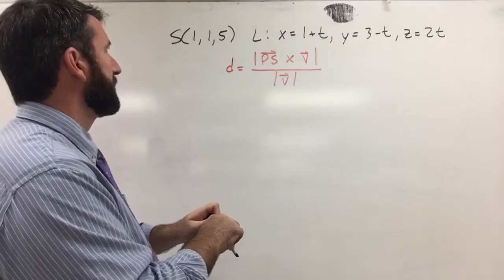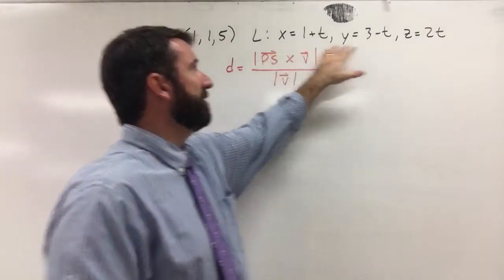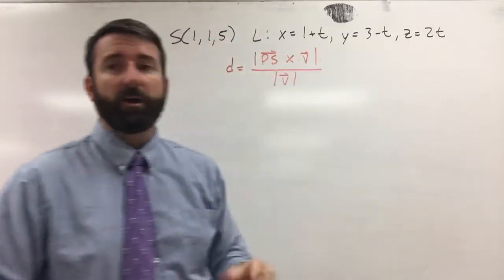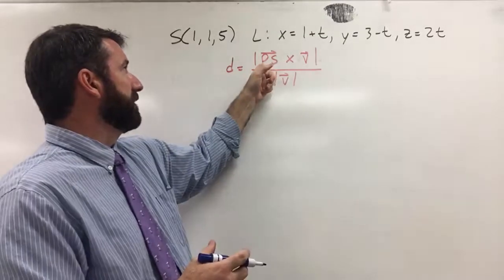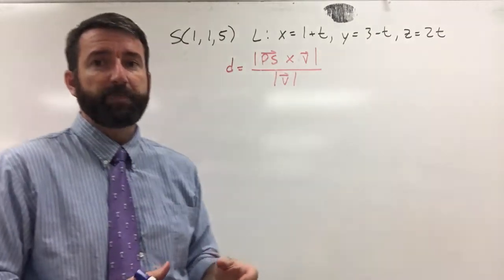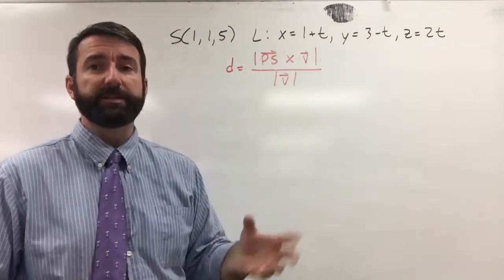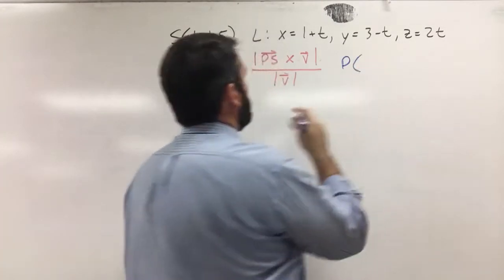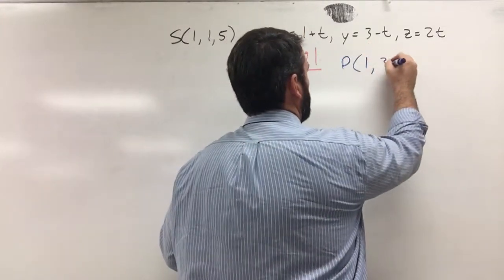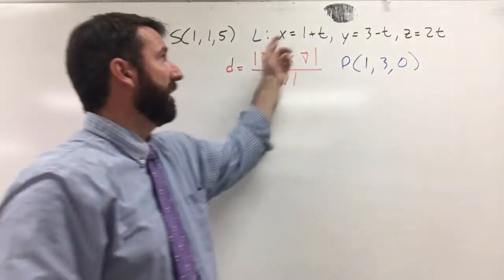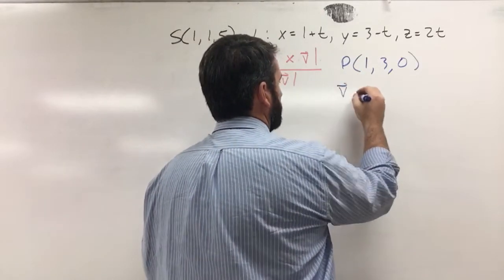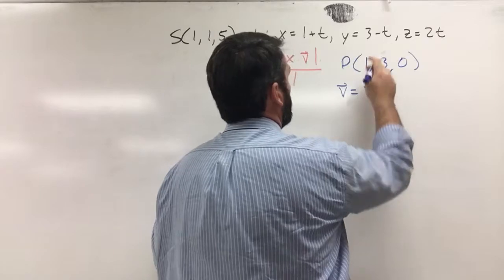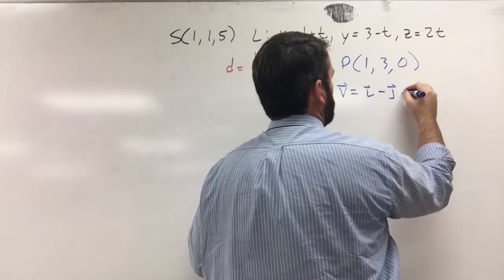Let's first find P and V. From the formula for the parametric equations of the line, the constant terms give us the coordinates for P, and the coefficients on T give us the components of vector V. So P is going to be (1, 3, 0) — that is a point on this line — and vector V parallel to that line is going to be 1i minus 1j plus 2k.